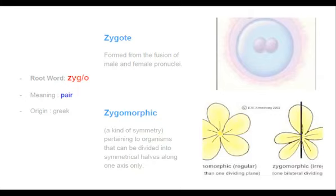The next word with this root is 'zygomorphic'. 'Morphic' relates to image or form. Zygomorphic is a kind of symmetry important to organisms that can be divided into symmetrical halves along only one axis. As we see in the figure, a zygomorphic flower can be divided into only two equal halves along one axis.